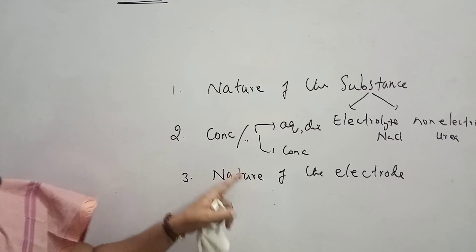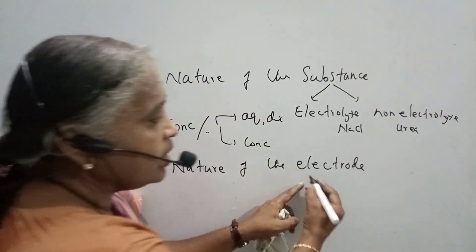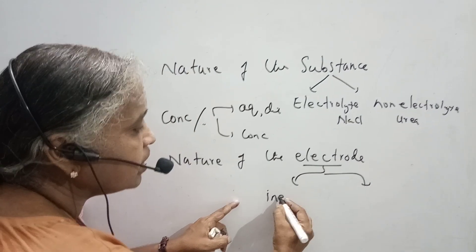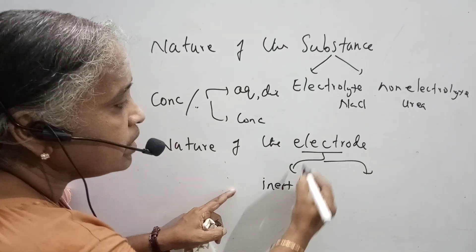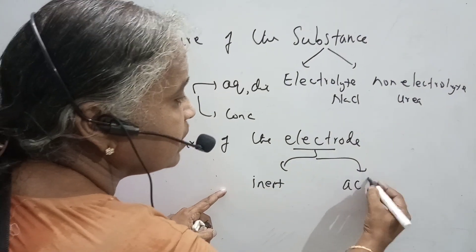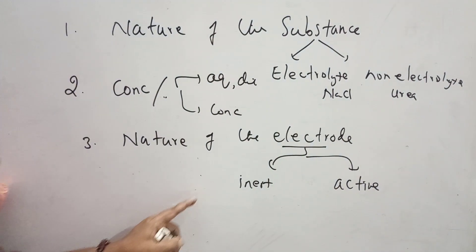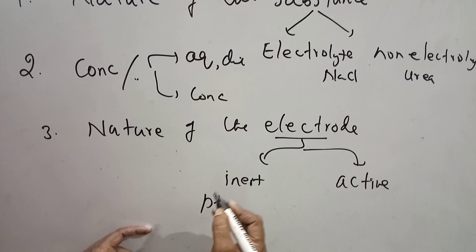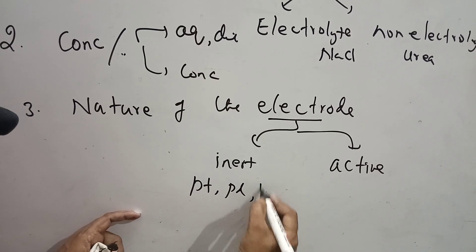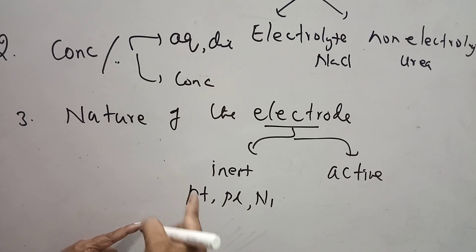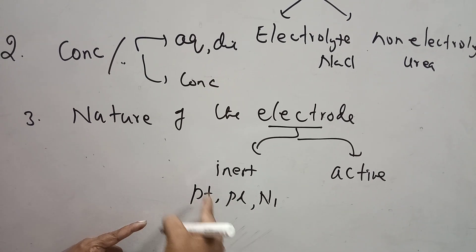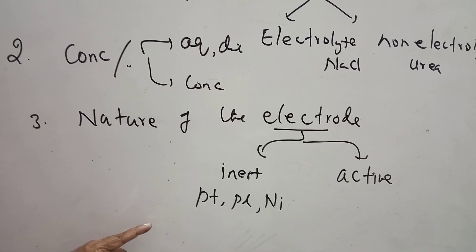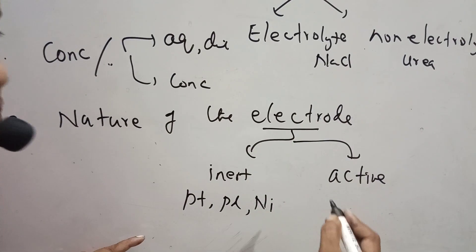The third point is nature of the electrode. We have two types of electrodes. One is called an inert electrode. An inert electrode means the electrode is platinum, palladium, or nickel — any one of these electrodes in any electrolyte solution.